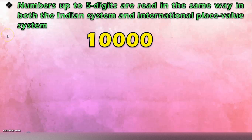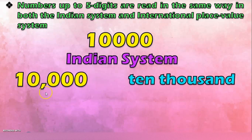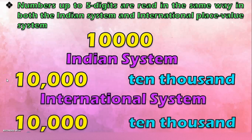Generally, numbers up to 5 digits are read in the same way in both the Indian System and the International Place Value System. This is a 5 digit number. In the Indian System, you call it 10,000 — you put a comma after the 1s, 10s, and 100s place, and you have the 1,000 and 10,000s place. Even in the International Place Value System, 5 digit numbers are given the same name, so this number is called 10,000. The difference comes only when we move into 6, 7, and 8 digit numbers.